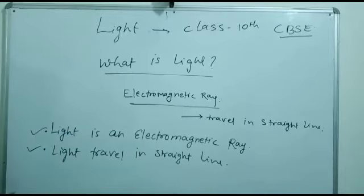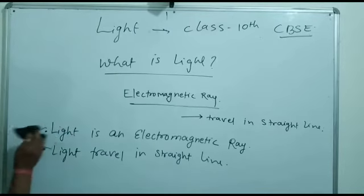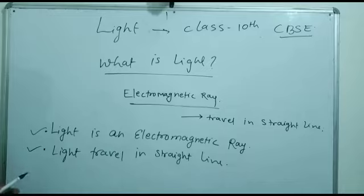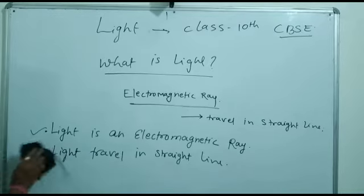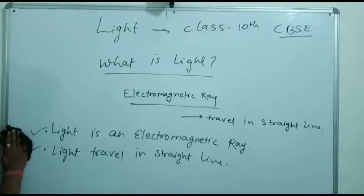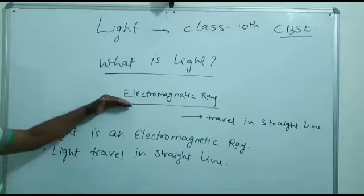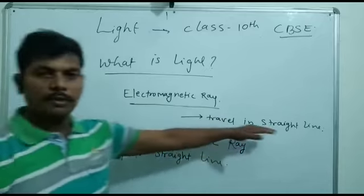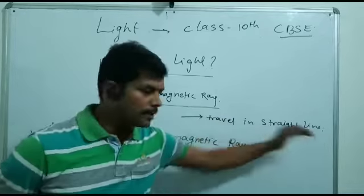Now the next thing we need to understand is: what is reflection of light? Light is electromagnetic rays which travel in a straight line.